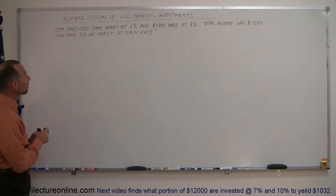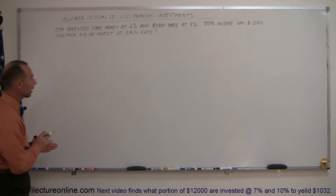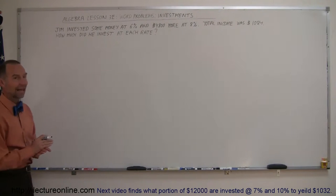It says Jim invested some money at 6% and $4,800 more at 8%. His total income was $1,084. How much did he invest at each rate?